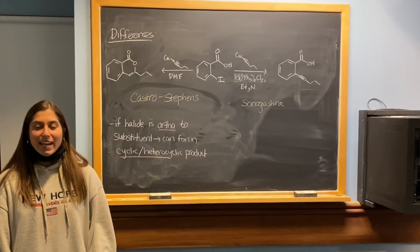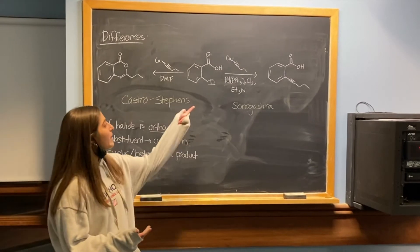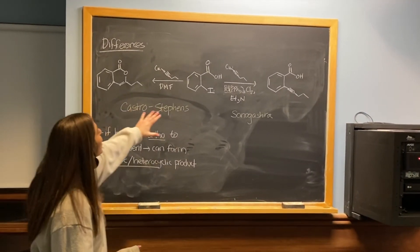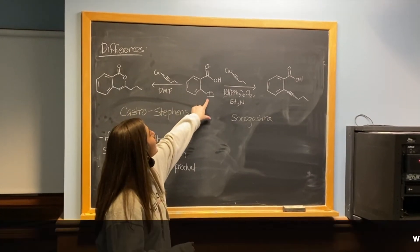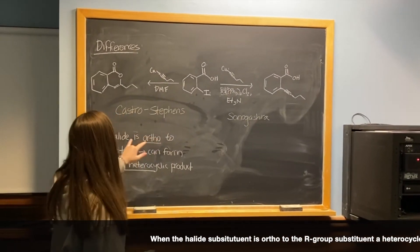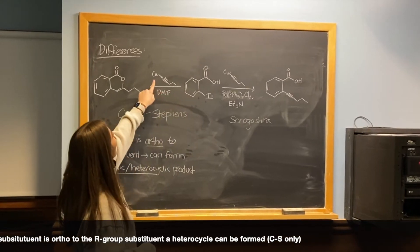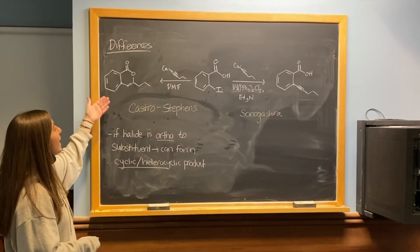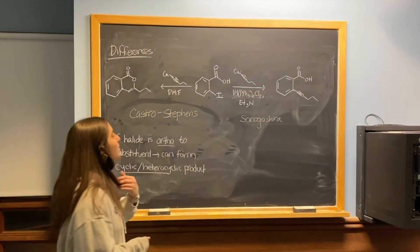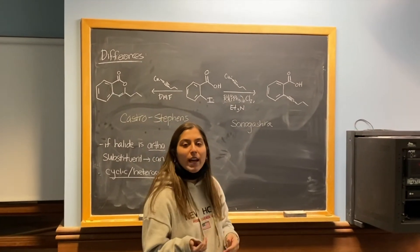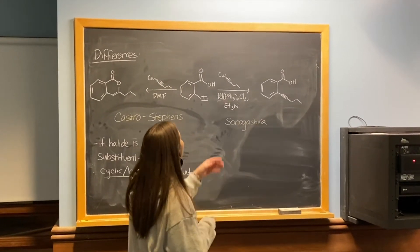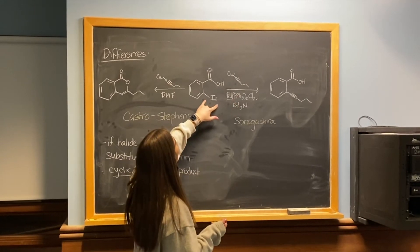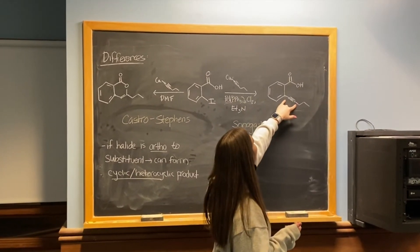Here are examples of the different products that can be formed depending on your aryl groups. In this starting material, we have an iodide ortho to our R group. Under Castro-Stevens reaction conditions — with a copper(I) catalyst in DMF — if the halide is ortho to the R group, the reaction is actually able to form a heterocycle and other cyclic products. For Sonogashira, an additional reaction would probably be needed to form a cyclic product. With palladium present, the alkyne replaces the iodide, forming a new carbon-carbon bond where the iodide once was.